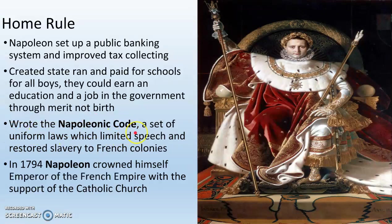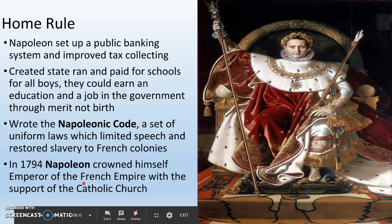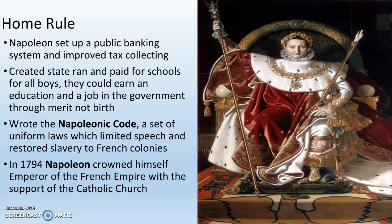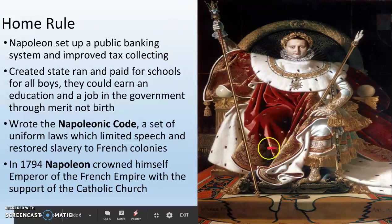Napoleon also writes the Napoleonic Code. The Napoleonic Code is both good and bad. It's good because it sets up a uniform set of laws for all French citizens. It's bad because it limits free speech and it actually restores slavery to the French colonies. In 1804, Napoleon crowns himself emperor of the French Empire with the support of the Catholic Church and the Pope. This is a big deal — no longer is he a dictator, and it is now certain that Napoleon's children are going to succeed to the throne after him. This is him in his imperial regalia.